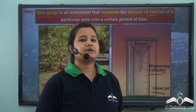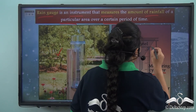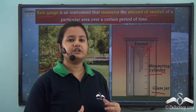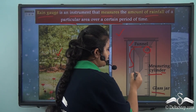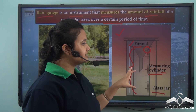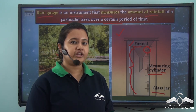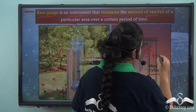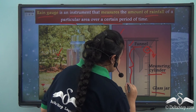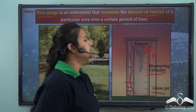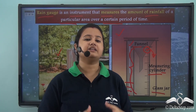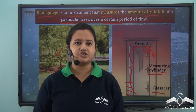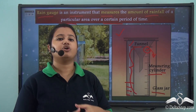If you look carefully, you can see a hole in the measuring cylinder. This hole serves a definite purpose: the cylinder can hold rainwater only up to a certain limit. If the amount of rainfall exceeds the cylinder's capacity, the extra water comes out through this hole and is collected in the glass jar below. That is why a hole is present in the measuring cylinder.